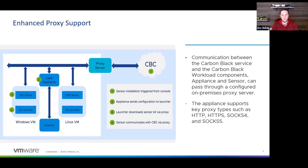What we've done is we have allowed the Carbon Black launcher — that's embedded into VMware Tools, which is responsible for installing the Carbon Black sensor on virtual machines via the plugin — to communicate via a proxy. So if your virtual machines are configured with a proxy already, that launcher will honor the proxy, download the sensor, and install it, and the sensor will inherit the proxy config.